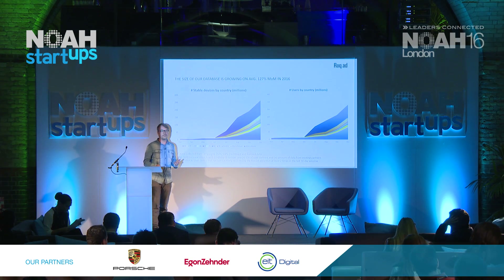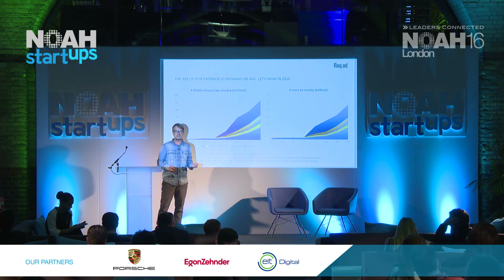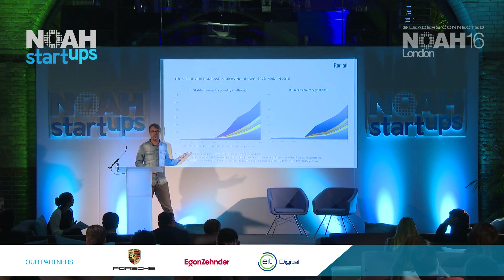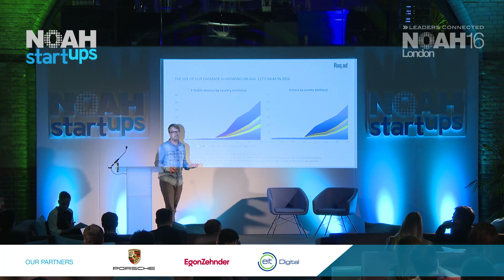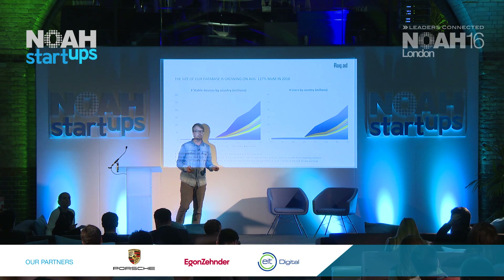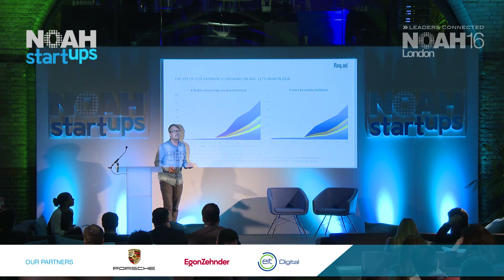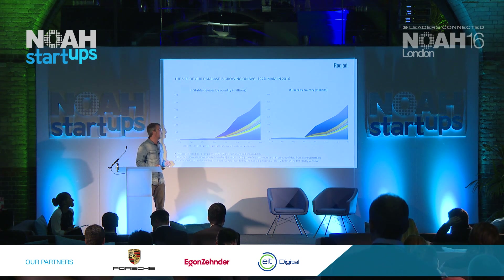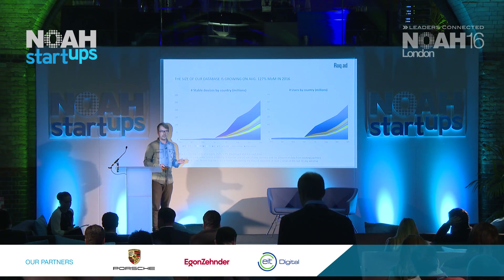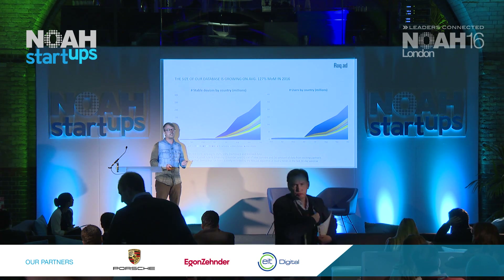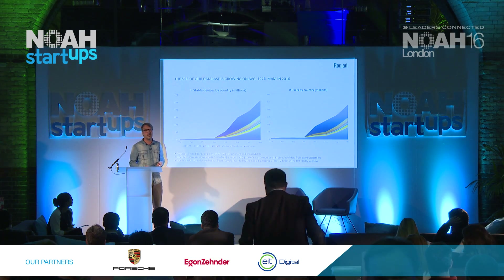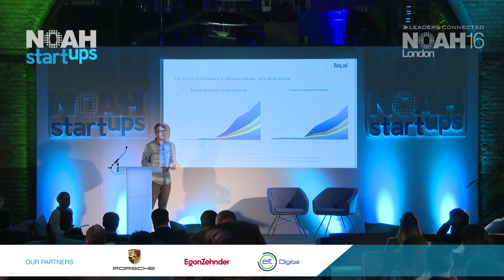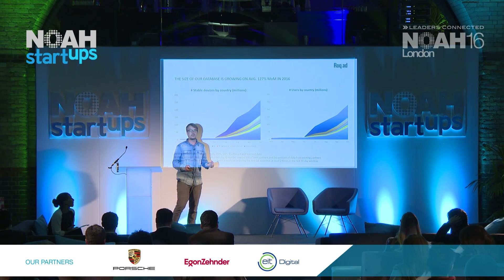Our database of users and devices is the backbone of our business and the key asset we are building. Here you see the development of unique users and unique devices in our database. In 2016, we had a month-on-month growth of over 140% of devices and users. The blue line at the bottom is the German market — that's where we started. But as you can see, we are already building a presence in the UK, France, Italy, Spain, and the Nordics. The big chunk at the top is data we are seeing from the US and from India.